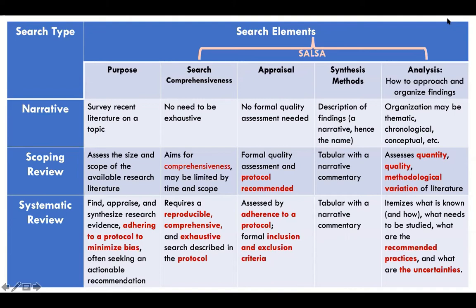One key thing we often miss: you can do a review systematically without having to answer a very specific actionable question. When you're doing that, very often you're doing a scoping review — comprehensively searching, likely still with a protocol, but looking more at the quantity, quality, and methodological variation of literature, as opposed to getting a recommendation for action.